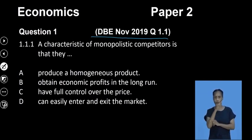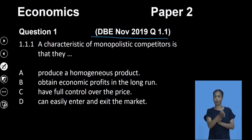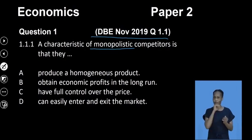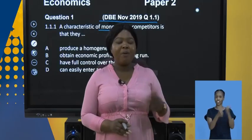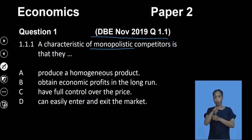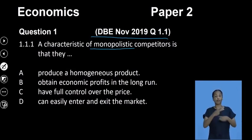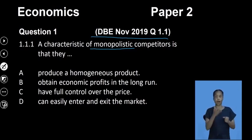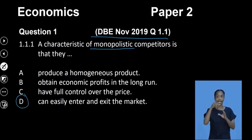Our first question says: a characteristic of a monopolistic competitor is that they are... Remember, the monopolistic competitor is a hybrid structure combining perfect competition and a monopoly. Please don't confuse the monopolistic competitor with the monopolist. Option A says they produce homogeneous products. B says they obtain economic profits in the long run. C says they have full control over their price. D says they can easily enter and exit the market. Our answer is D.